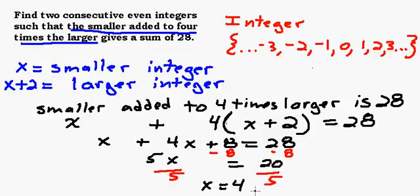Lucky for us, it's an even integer because that's what we wanted. Let's go back up to the top here. We're trying to find two consecutive even integers. We know X equals four, that's our smaller one. My smaller integer is four, and my larger integer would then be four plus two, or six. So the answer is four and six.